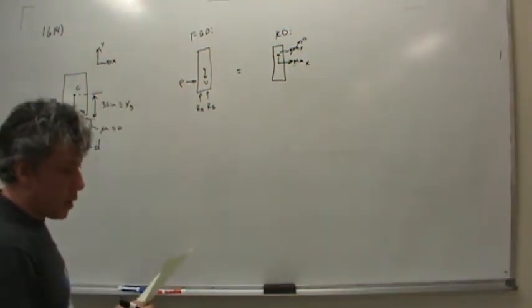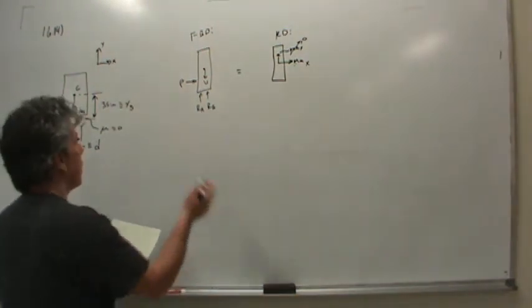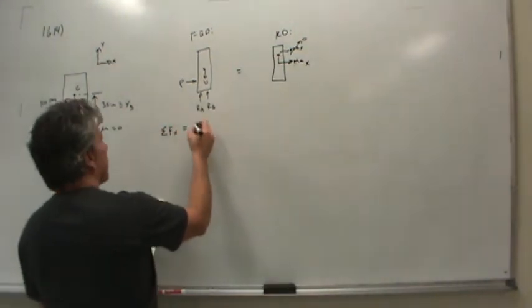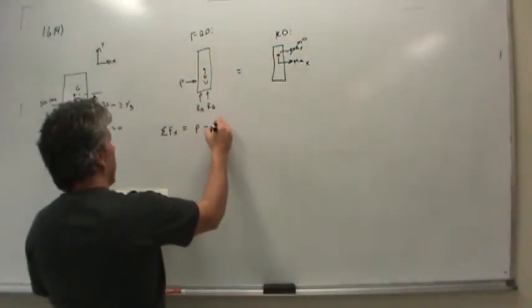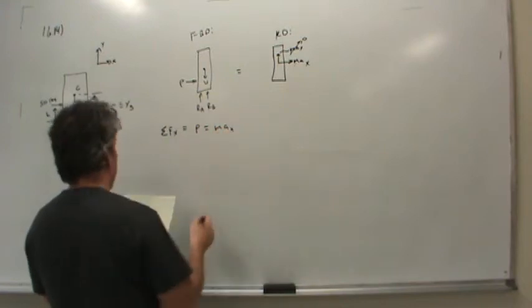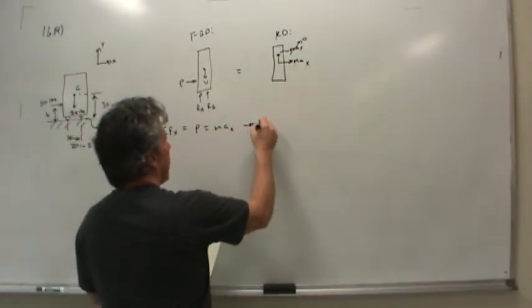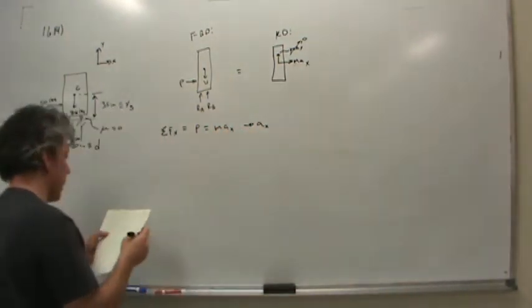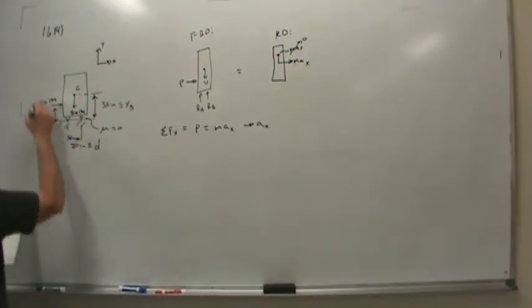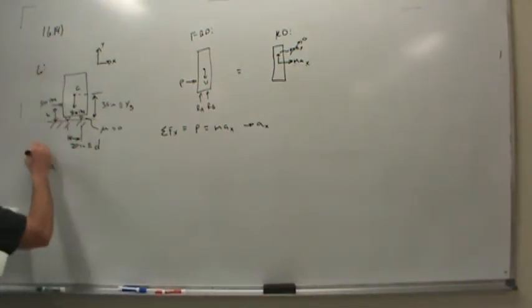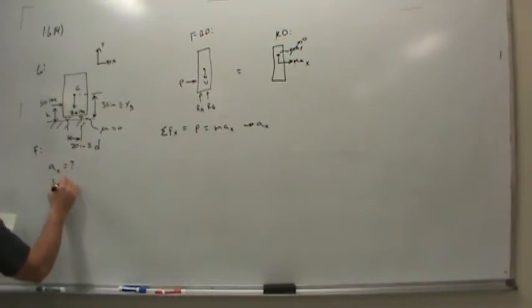So if we sum forces in the x direction, we'll get P, and that equals mass times acceleration in the x direction. So acceleration in the x direction, which is one of the things we're supposed to find. I guess this is a given, and here's a find. Acceleration in the x direction and H for no tipping.